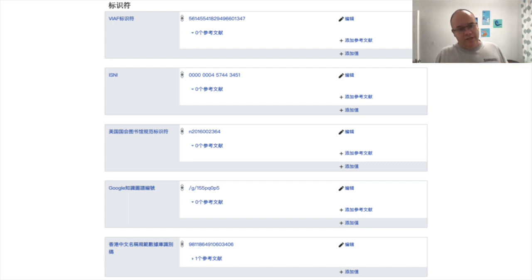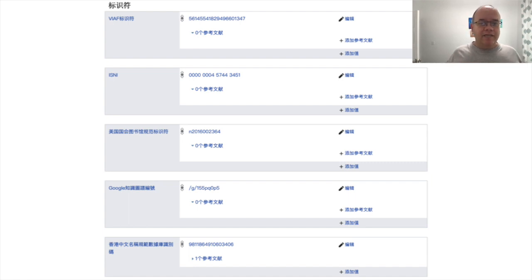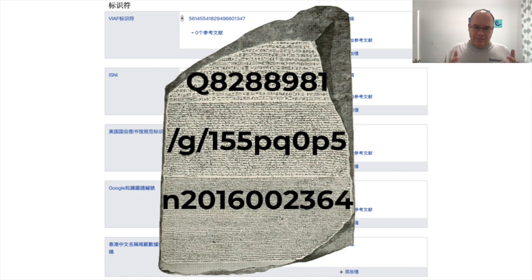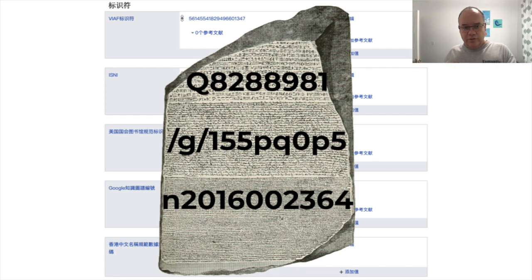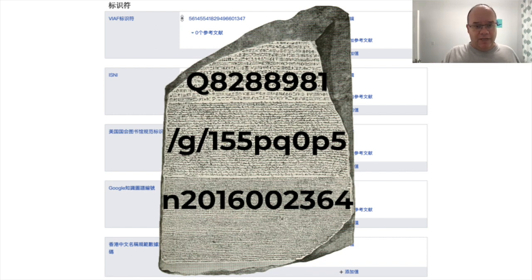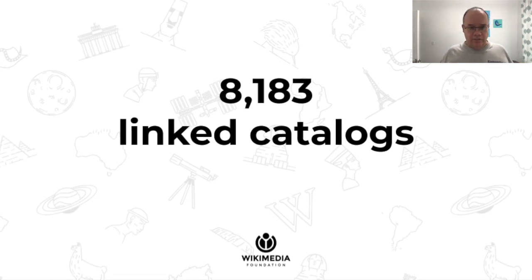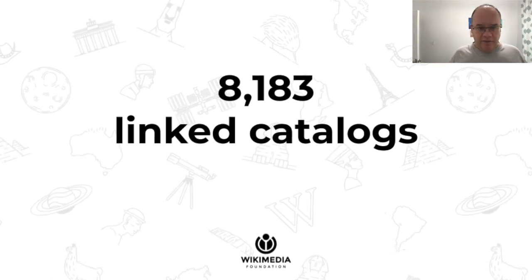A bit further down on the page, we can find more statements about Lu Shijia, and particularly identifiers in other knowledge bases, in authority files and other websites. This allows Wikidata to act like a modern Rosetta Stone, where you can translate from an identifier in one knowledge source to identifiers in other knowledge sources. But unlike the Rosetta Stone, we map not only between three different representations, but we connect more than 8,000 knowledge sources, authority files and catalogues with each other.